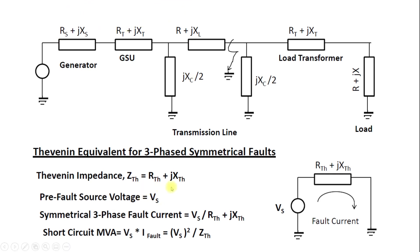Once we have the Thevenin impedance, we need to know the pre-fault source voltage. Using the formula V = IZ, we can calculate the short circuit current as I = V/Z. Converting the system to its equivalent form and calculating the current through this simple circuit gives us the short circuit current.